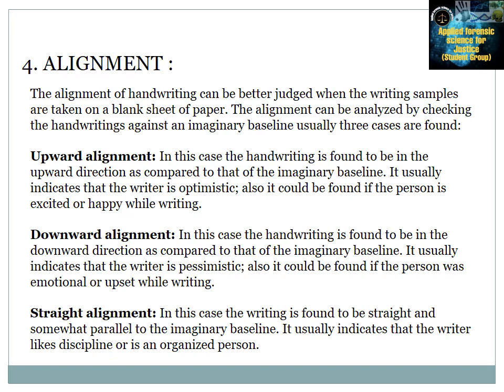The fourth feature is alignment. Alignment can be better judged when writing samples are taken on a blank sheet of paper. Upward alignment — when handwriting goes upward compared to the imaginary baseline — usually indicates the writer is optimistic or excited and happy while writing. Downward alignment — when handwriting goes downward compared to the imaginary baseline — usually indicates the writer is pessimistic or was emotional and upset while writing. Straight alignment — when writing is parallel to the imaginary baseline — usually indicates the writer likes discipline and is an organized person.